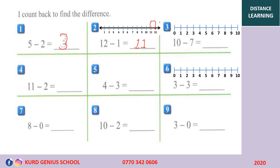And this one: 10 minus 7. Look at the number line. We are on number 10. We count back seven numbers — 1, 2, 3, 4, 5, 6, 7. So we finish at number 3. So 10 minus 7 equals 3.